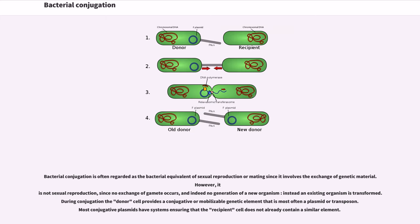Bacterial conjugation is often regarded as the bacterial equivalent of sexual reproduction or mating since it involves the exchange of genetic material. However, it is not sexual reproduction, since no exchange of gametes occurs and indeed no generation of a new organism.